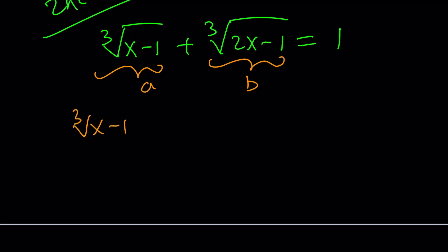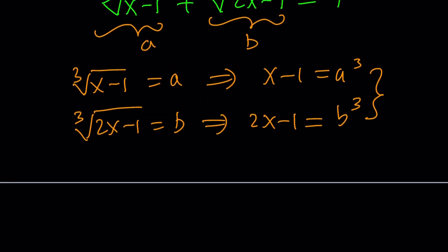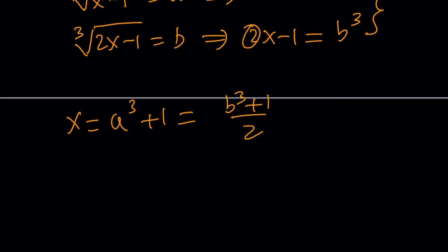So cube root of x minus 1 equals A implies the following. Cube both sides, x minus 1 becomes A cubed. Cube root of 2x minus 1 equals B, cube both sides, 2x minus 1 equals B cubed. Now, we're not going to stop at this, and we're actually going to get rid of the x. How? We're going to isolate x from both of these equations, so find the relationship between A and B. Or you can double the first equation and then subtract from the second one, or the other way around. I like to isolate the x. x equals A cubed plus 1, or B cubed plus 1 divided by 2. Remember, we have a coefficient, so we have to divide. Now, these two things are equal, independent of x.